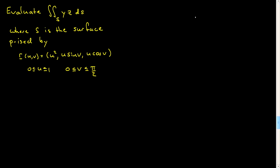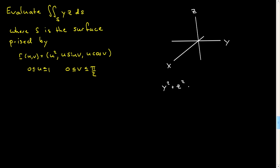You're not asked to sketch the surface, and you don't even have to understand what it is, but I think it's useful to do. If you look at the y and z components, you should see more or less immediately that y squared plus z squared, because of the sine and cosine, will simply equal u squared. But u squared is simply x. So the x, y, z points on the surface satisfy x equals y squared plus z squared. Hopefully you'll recognize that as a paraboloid — in fact, it's a circular paraboloid.